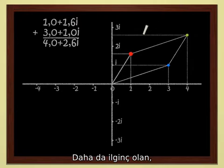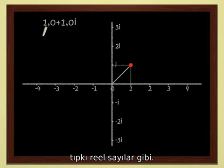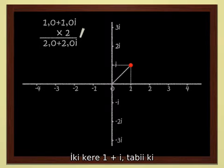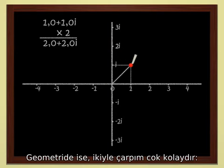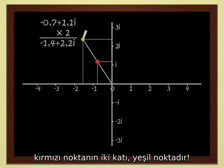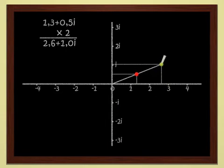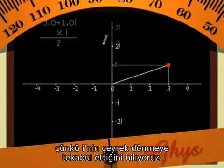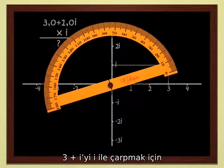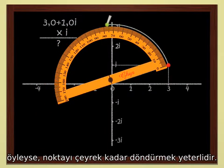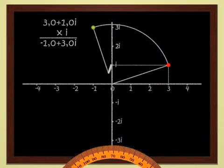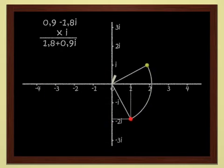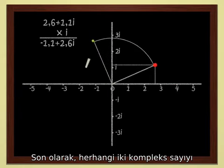Much more interestingly, these complex numbers can also be multiplied, just like real numbers. Let's see. We know how to multiply a complex number by 2, for instance. 2 times 1 plus 2i gives 2 plus 4i. Geometrically, multiplying by 2 is easy. It's just scaling up by a factor of 2. If we double the red point, we get the green point. Multiplying by i is not difficult either, since we know that i corresponds to a quarter turn. In order to multiply 3 plus i by i, we just have to rotate by a quarter turn. We get minus 1 plus 3i. Not so complicated, these complex numbers.